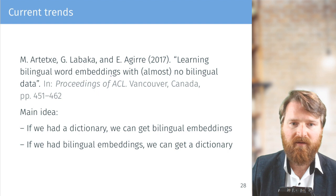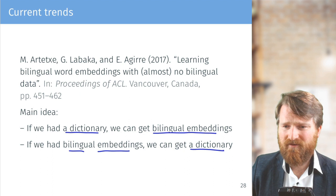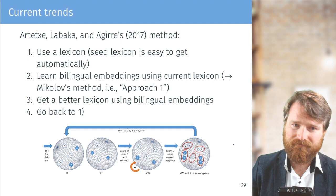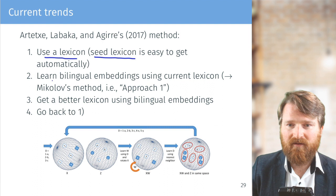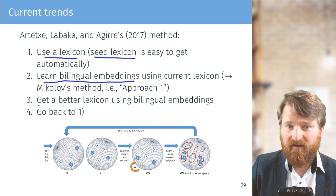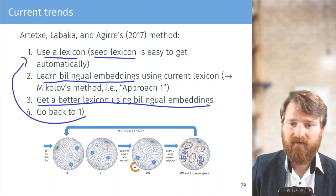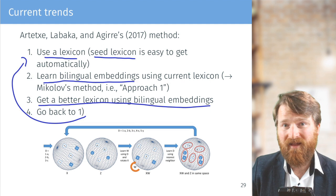A 2017 paper, 'Learning Bilingual Word Embeddings with (Almost) No Bilingual Data', uses an iterative method: start with a small seed lexicon — maybe just 5-10 word pairs — use it to learn bilingual embeddings, then use those embeddings to build a better lexicon, and repeat. This bootstrapping loop works well because you only need a very small seed lexicon and iteratively improve both the lexicon and the bilingual embeddings.